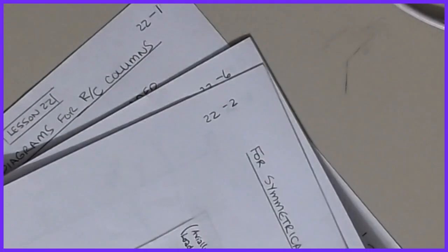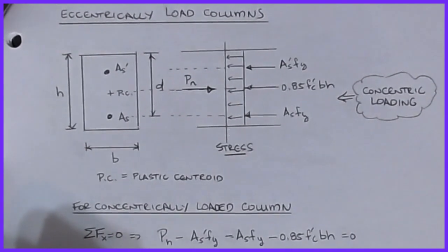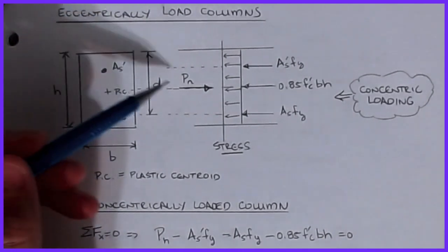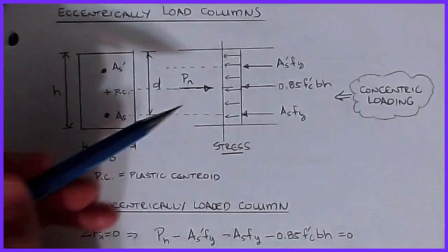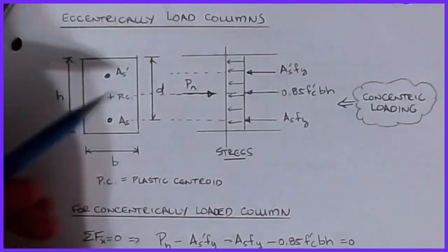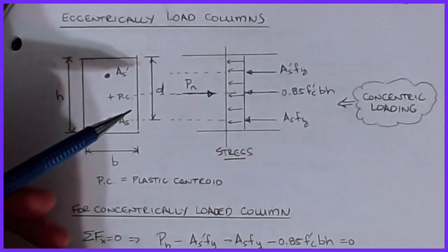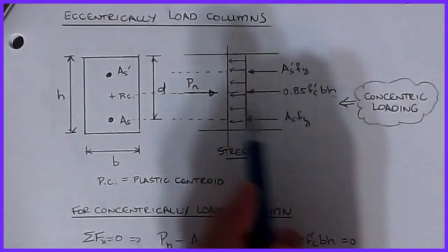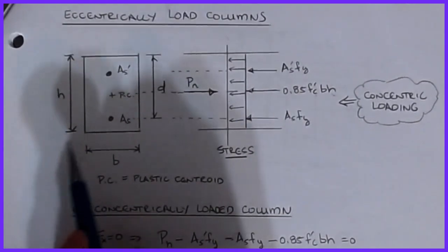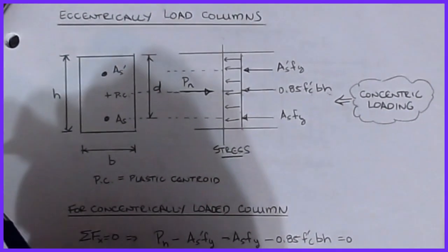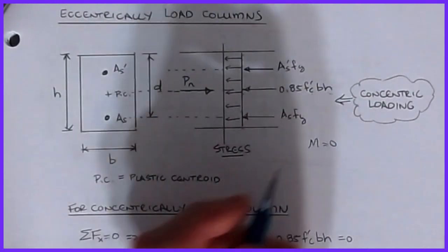So we can start talking about eccentrically loaded columns. We're going to take an arbitrary rectangular column — the same approach works whether it's spirals or ties. The first picture we're going to look at looks a lot like a Whitney diagram: you can see the 0.85f'c, the width B, and then this height parameter which was 'a' when we were doing flexure is now actually the whole height of the column. This picture is for a concentrically loaded column — there is no moment, so the stress at every point is the same.